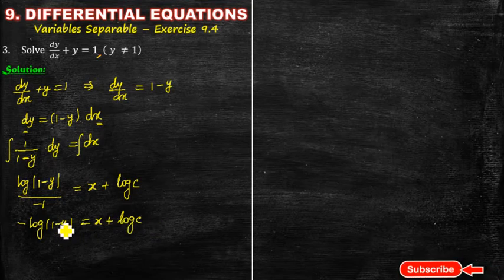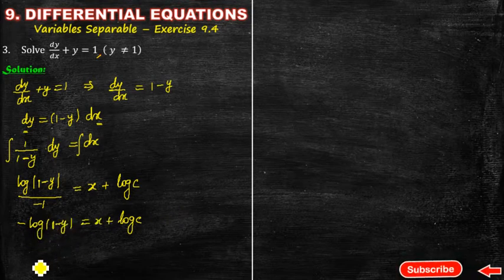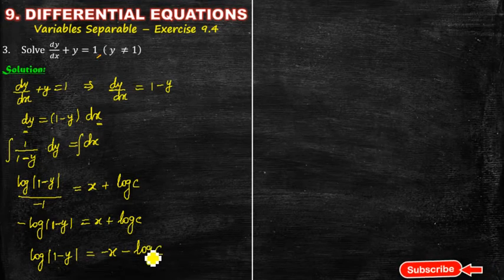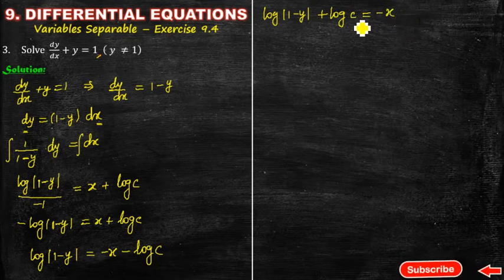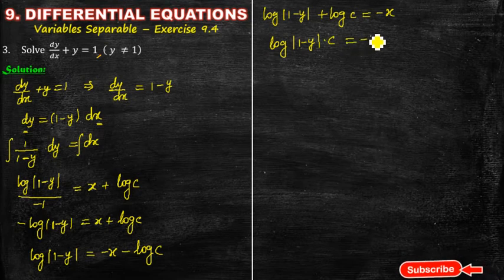If we multiply the entire equation by minus 1, log of modulus of 1 minus y equals minus x minus log c. Moving minus log c to the left-hand side: log of modulus of 1 minus y plus log c equals minus x. Applying the log addition rule, log of c times modulus of 1 minus y equals minus x.